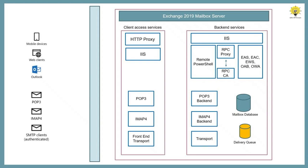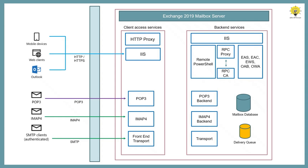Whenever users use client applications to access their mailboxes, these applications connect to the client access services, and client access services proxy these requests to the backend server that is running on the mailbox server. Clients do not directly connect to the backend services. They always connect to the client access services, and these requests are forwarded to the backend server by client access services.